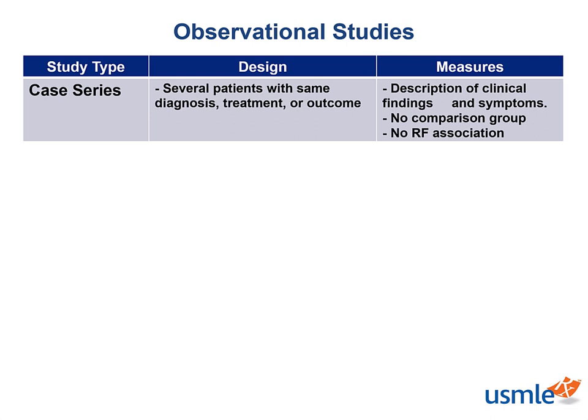First up, we have case series. This type of study involves descriptions of a group of patients who all have something in common, whether it be a disease, a treatment, or an outcome to a specific therapy. This is the type of study used to describe clinical findings and symptoms. It is not able to establish any risk factor association.